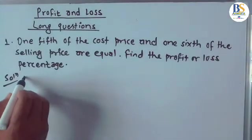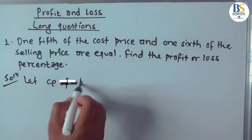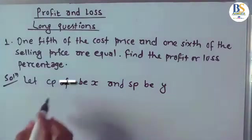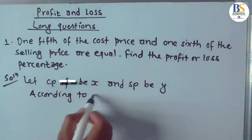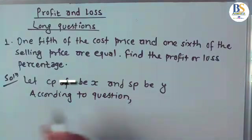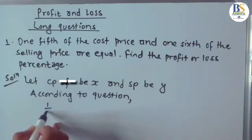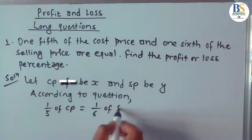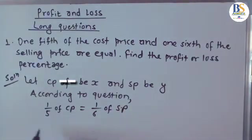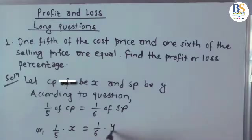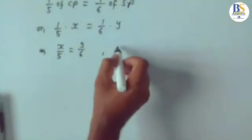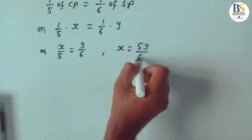Question one: one-fifth of cost price and one-sixth of selling price are equal — find the profit or loss percent. Let CP be X and SP be Y. According to the question, one-fifth of cost price equals one-sixth of selling price, so 1/5 × X = 1/6 × Y, which gives X/5 = Y/6. This can be written as X = 5Y/6 and Y = 6X/5.